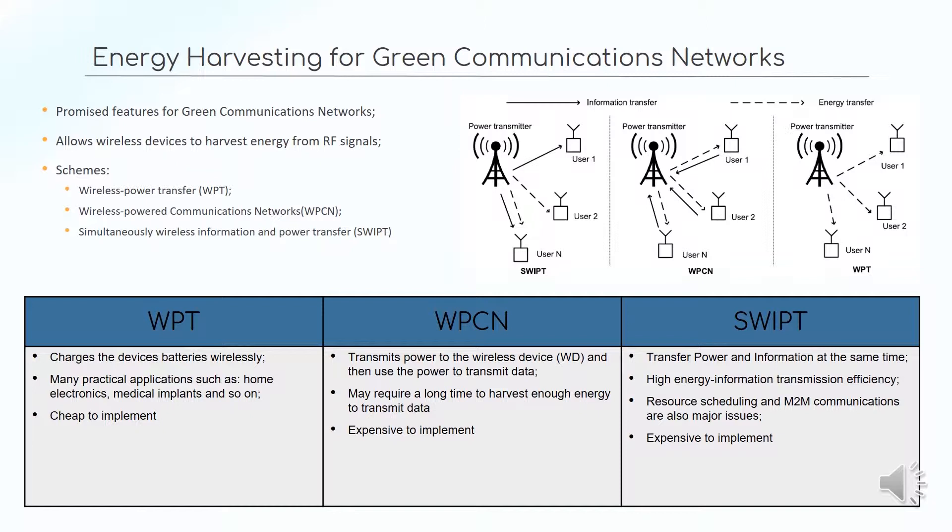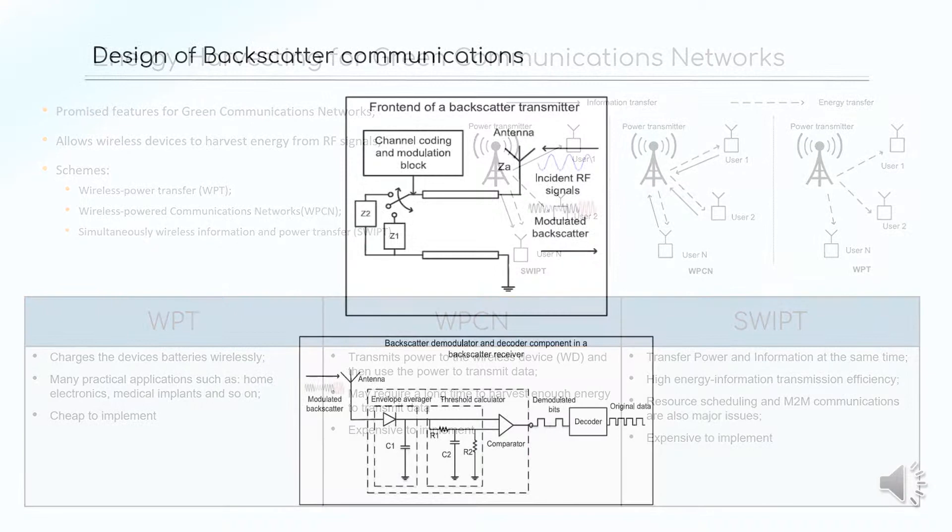WPT, wireless power transfer, allows for the device's battery to charge wirelessly. WPCN, wireless powered communication networks, transmit power to the wireless device and use this power to transmit data. Lastly, SWIPT, the simultaneously wireless information and power transfer scheme, allows for power and information to be transferred at the same time.